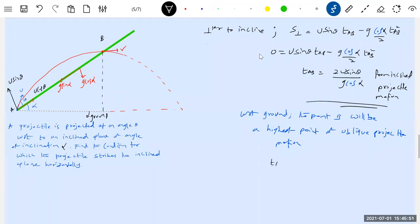Let's write time of flight, time taken to move from A to B. In that case, we write U sine of theta plus alpha by G. That's half of the time of flight.